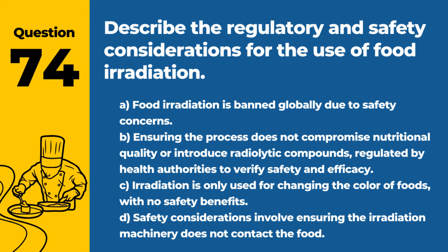Question 74. Describe the regulatory and safety considerations for the use of food irradiation. a. Food irradiation is banned globally due to safety concerns. b. Ensuring the process does not compromise nutritional quality or introduce radiolytic compounds, regulated by health authorities to verify safety and efficacy. c. Irradiation is only used for changing the color of foods, with no safety benefits. d. Safety considerations involve ensuring the irradiation machinery does not contact the food. Answer: b. Ensuring the process does not compromise nutritional quality or introduce radiolytic compounds, regulated by health authorities to verify safety and efficacy. Food irradiation is a controlled process used to ensure the safety of certain food items.